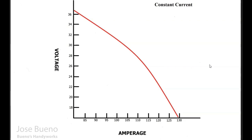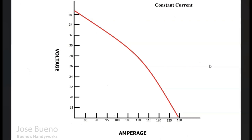With SMAW, the electrode does a couple of different things. One, it starts and stabilizes the welding arc, and two, it also fills the weld puddle. So when we're fusing metals together, the electrode not only starts and maintains the welding arc, but it's filling in the weld, and we're doing that by hand. We have to slowly feed the electrode into the weld puddle, and that is why it's considered a manual welding process.